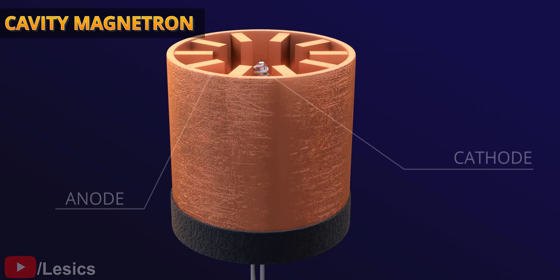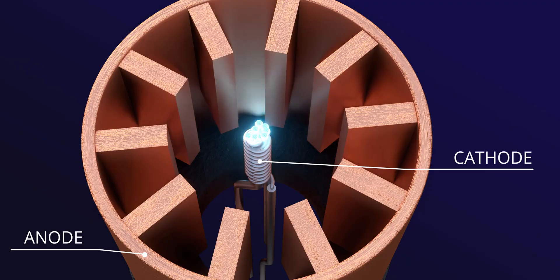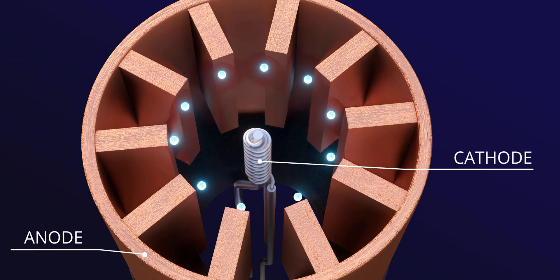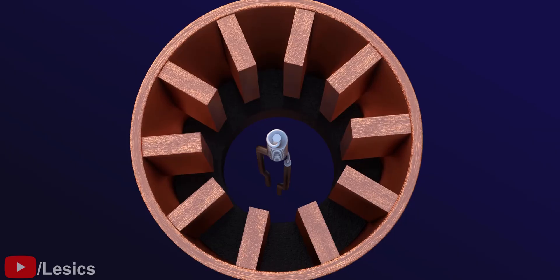When high voltage is applied to the cathode of a magnetron, it ejects many electrons through thermionic emission. Let's observe the behavior of one electron and its resulting impact on the cavity.